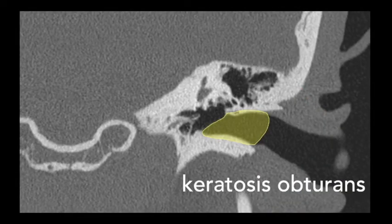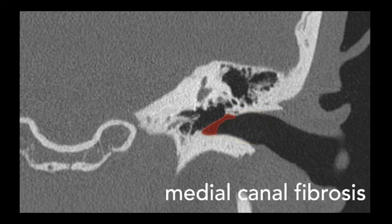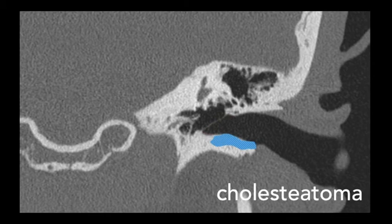To review: keratosis obturans is a keratin plug within the EAC that will benignly expand the canal with pressure; medial canal fibrosis is a fibrotic reaction to previous injury and commonly has a crescentic external margin; and cholesteatoma is squamous epithelium trapped submucosal — congenitally or through trauma — where exfoliated keratin causes an inflammatory response and destroys bone.